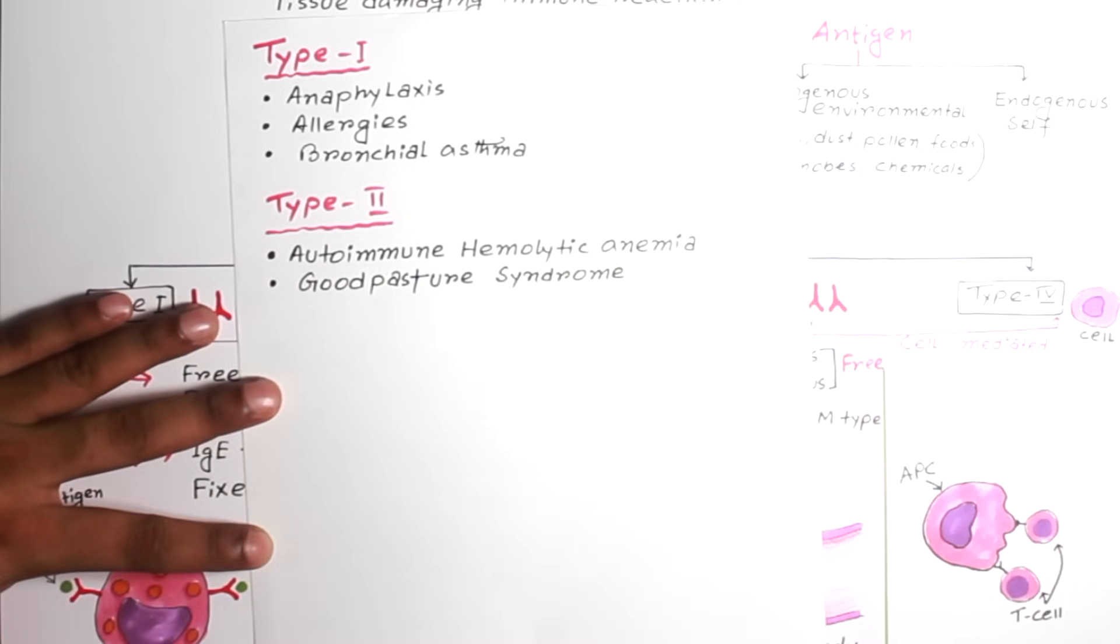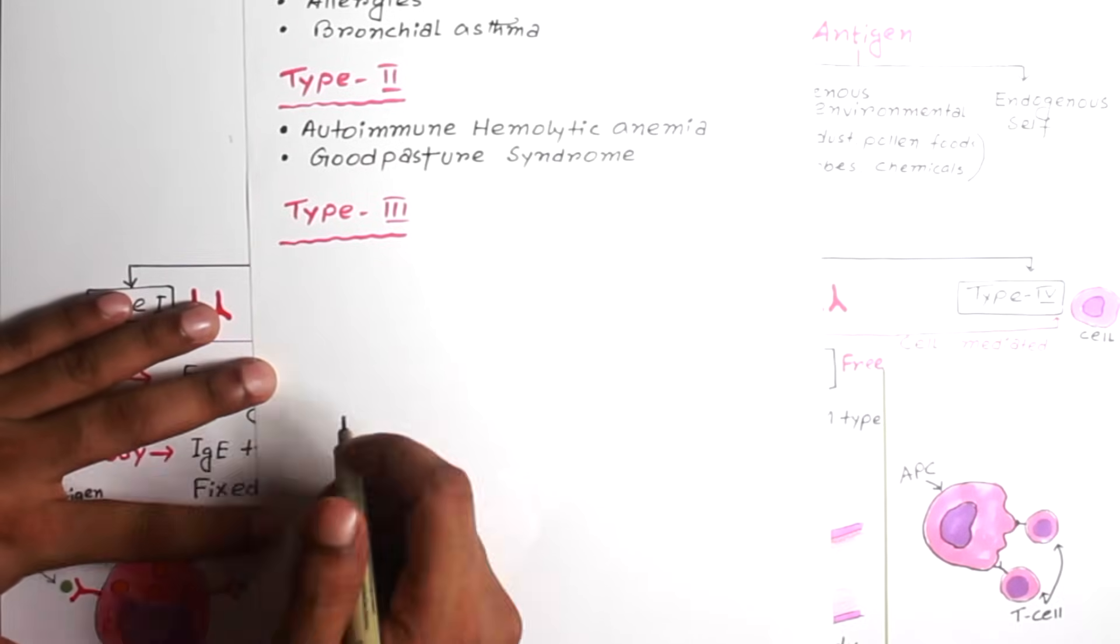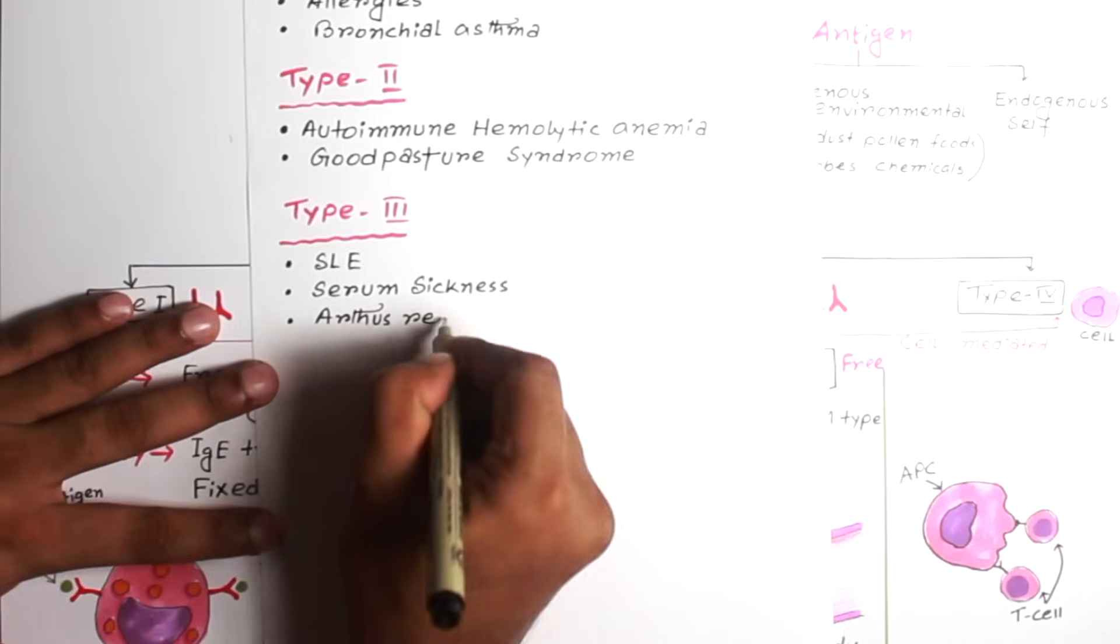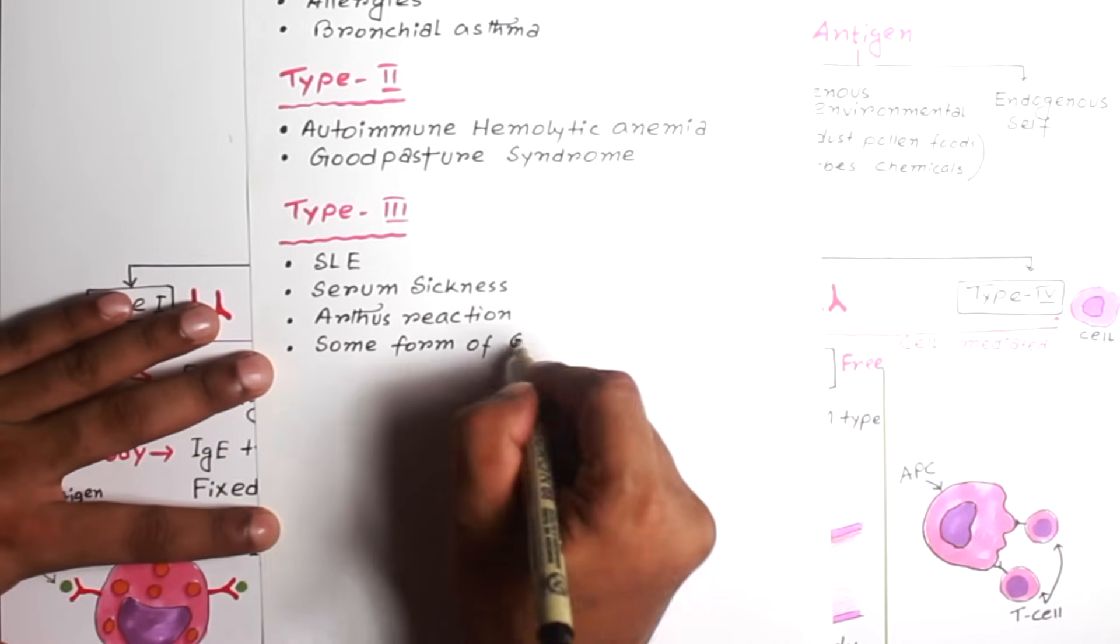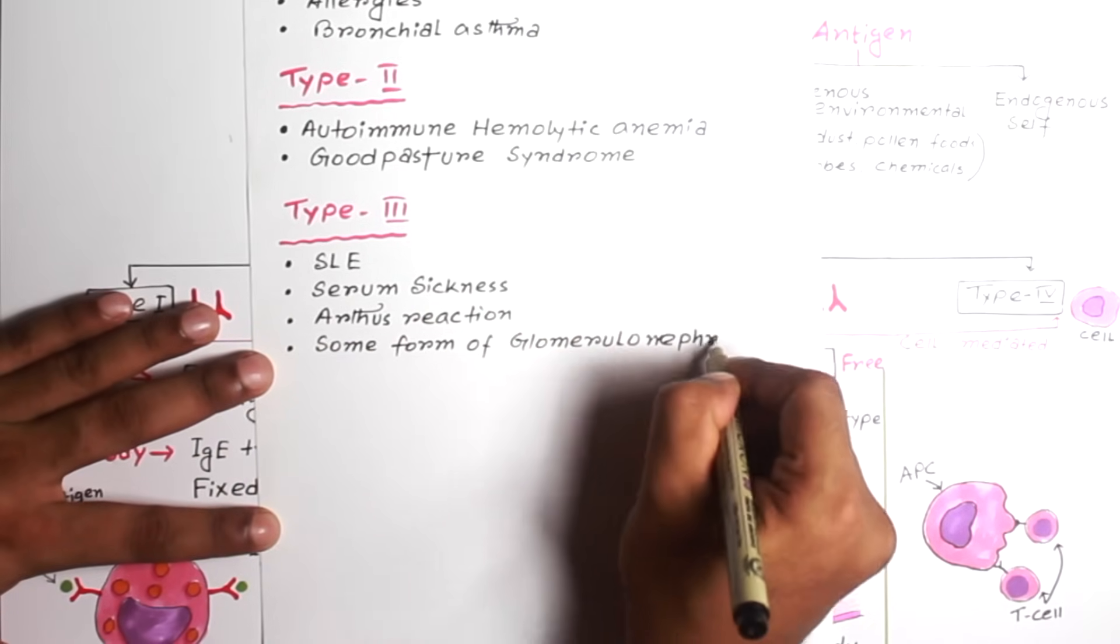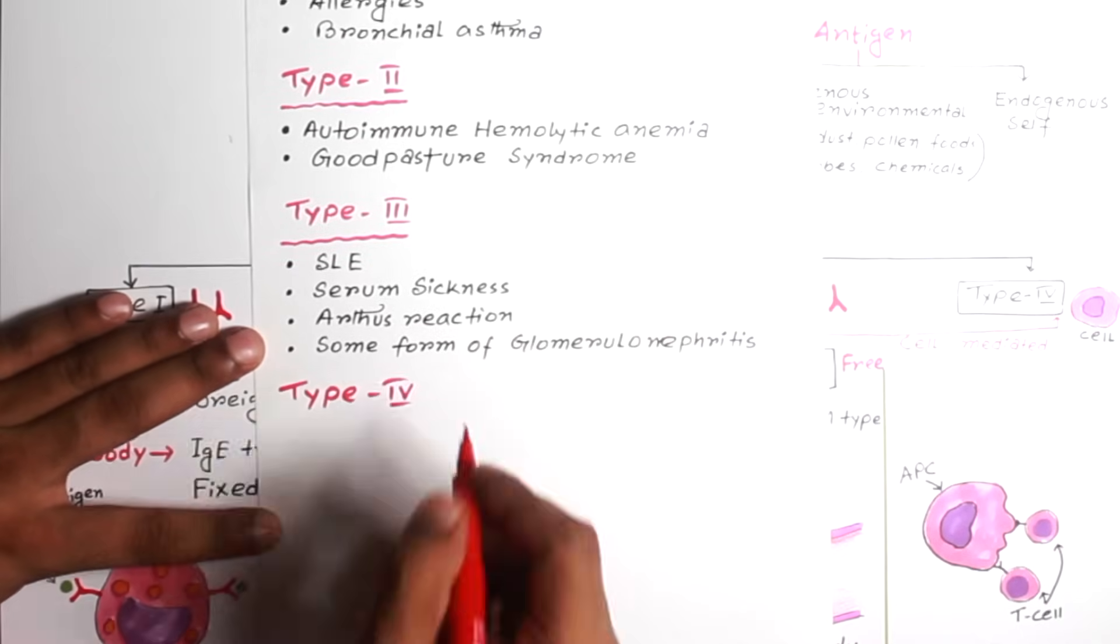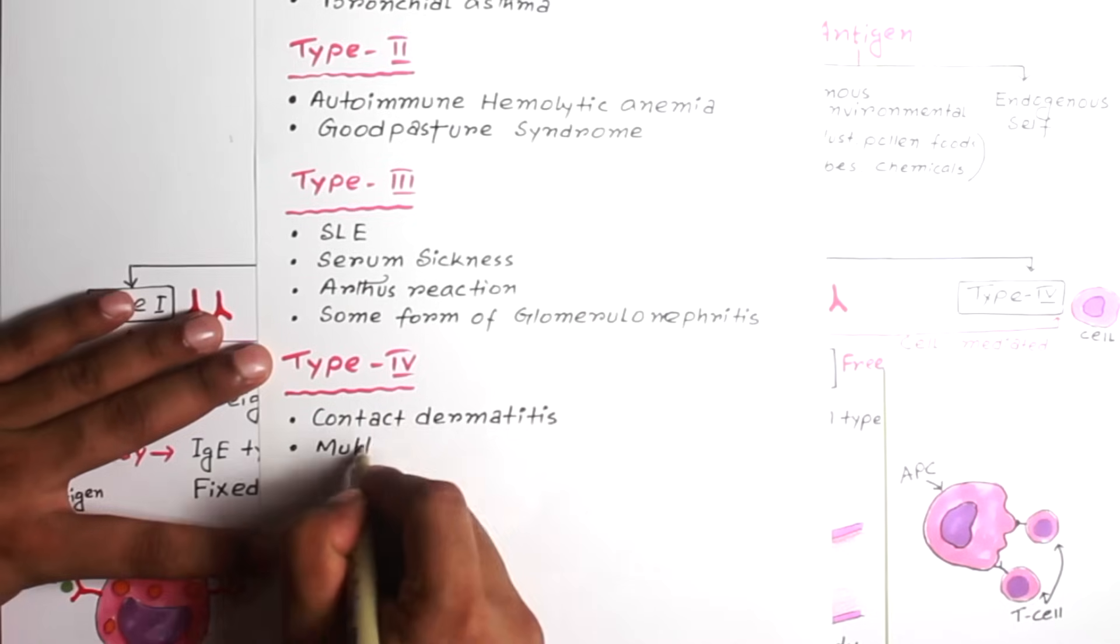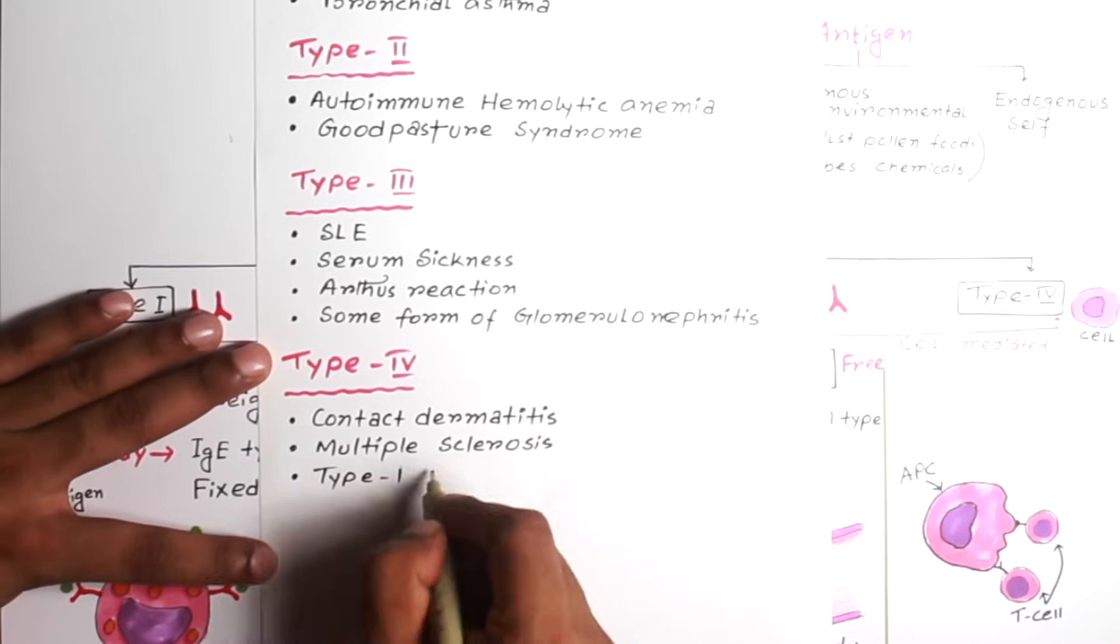And some important Type 3 hypersensitivity reactions are SLE, serum sickness, Arthus reaction, and some form of glomerulonephritis. And the examples of Type 4 hypersensitivity reactions are contact dermatitis, multiple sclerosis, type 1 diabetes and tuberculosis.